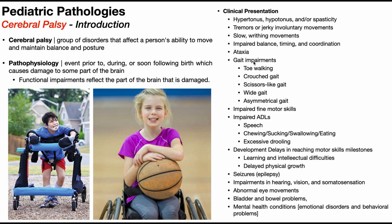There can be specific gait impairments depending on how tone affects various muscles — like toe walking, a crouched gait, a scissoring gait, wide gait, or asymmetrical gait. Individuals can have impaired fine motor skills and impaired ADLs such as speech, things involving the pharynx and mouth — chewing, sucking, swallowing, eating — and excessive drooling.